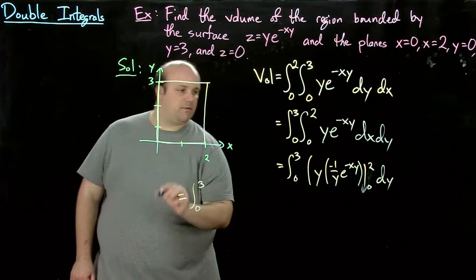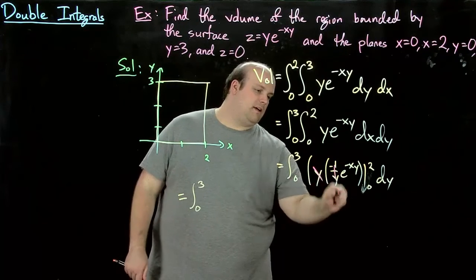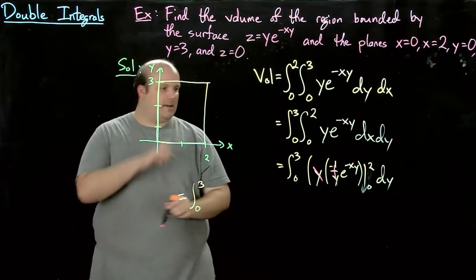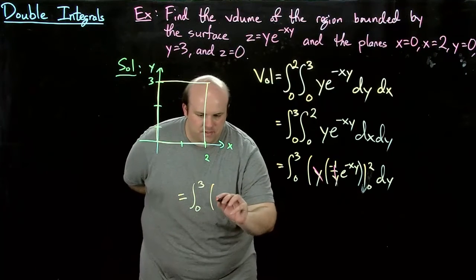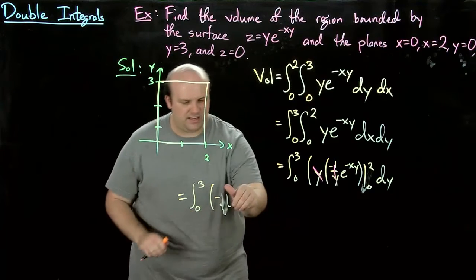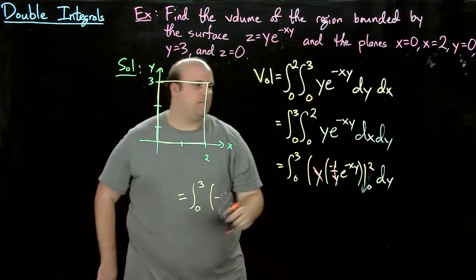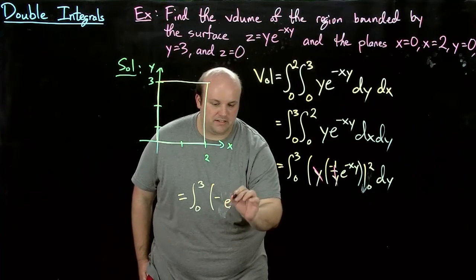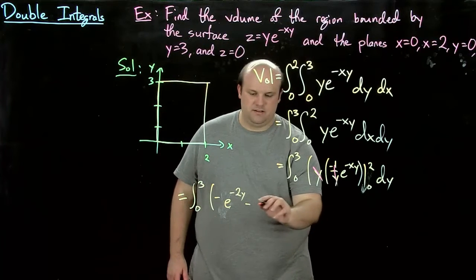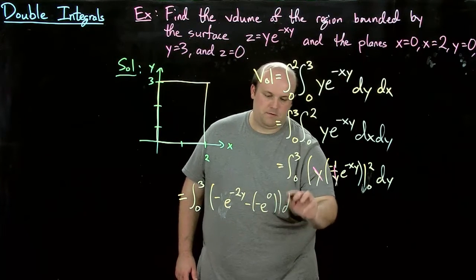Let's continue this. Integral from 0 to 3. Well, the nice thing here is those y's cancel out, and we still keep the minus 1 there. So we get negative e to the minus 2y, minus negative e to the 0, dy.